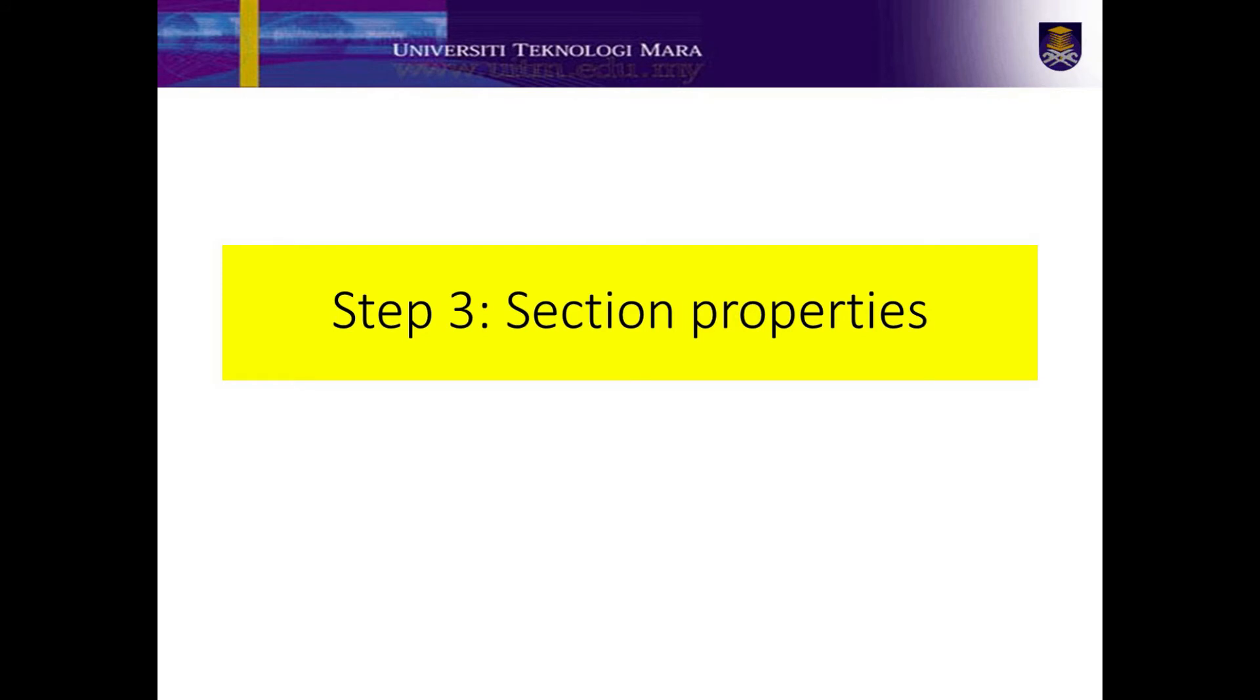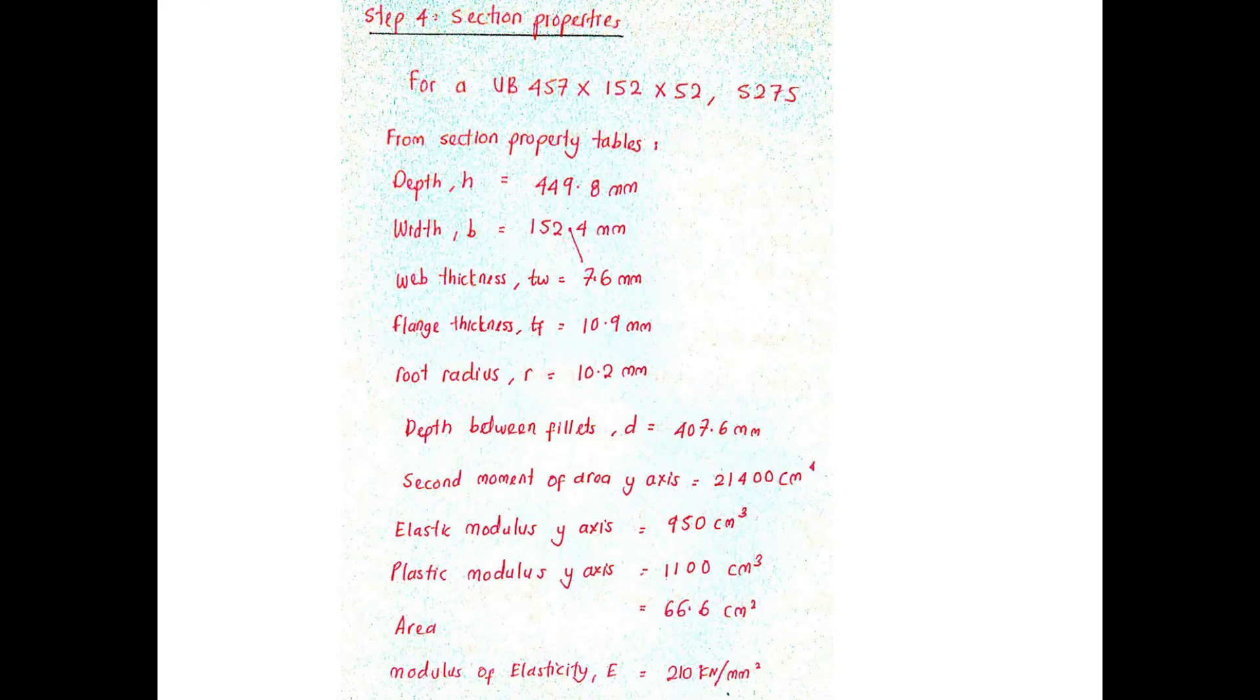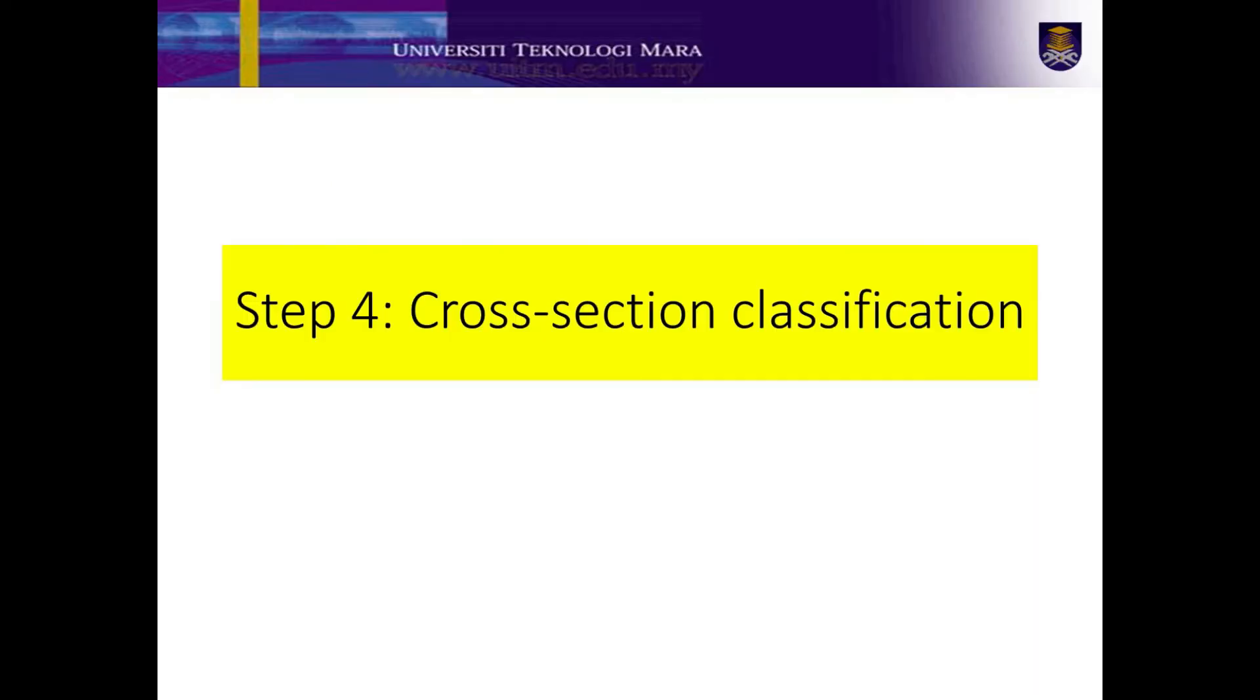Next, in step 3, list all the section properties required. Listed here are the required section properties for universal steel beam 457, 152 and 52 grade S275.